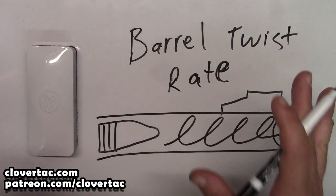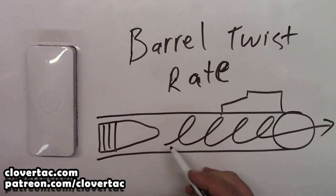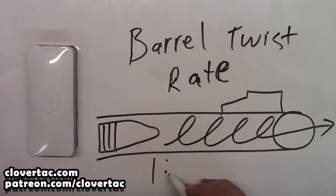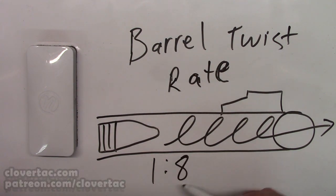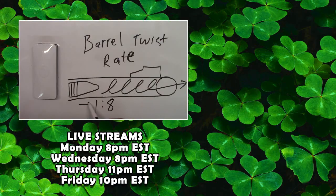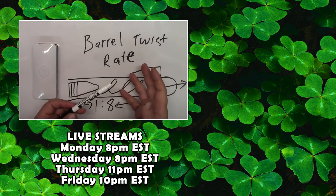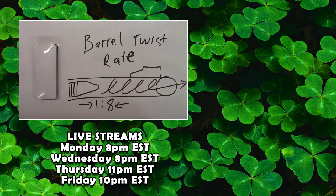So to recap the basics of barrel twist rate: remember that if you're dealing with, let's say a one-in-eight, the one is revolutions. The eight is how much barrel in inches it takes to achieve said revolution. I want to thank you for watching today, and as always, remember to cherish our freedom.